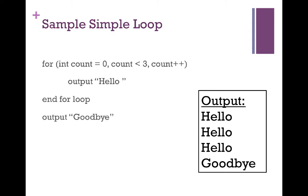After the third hello is output, we increase count by one, so count is now three. Three is not less than three, so that condition turns false and we exit out of the for loop and print goodbye.